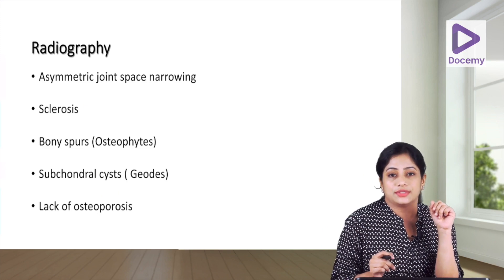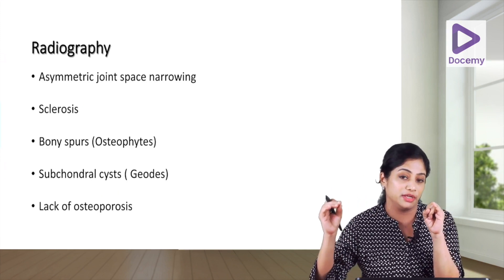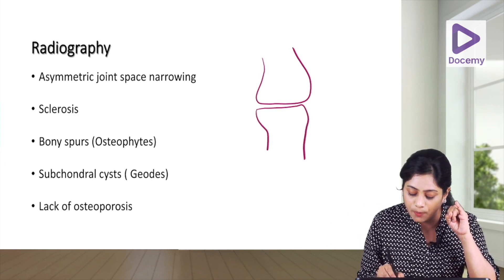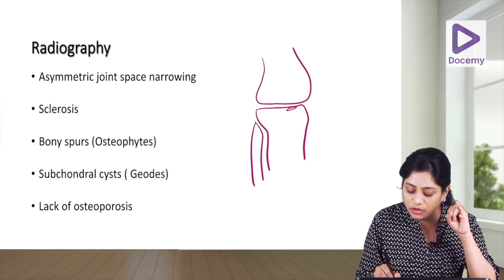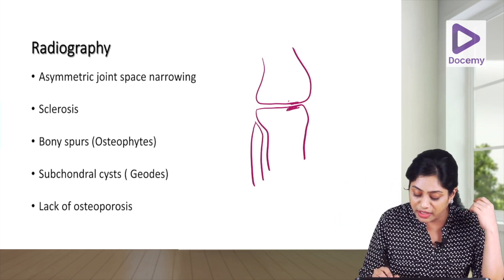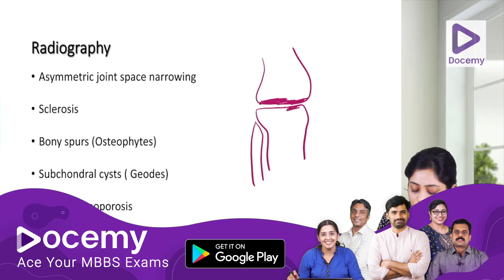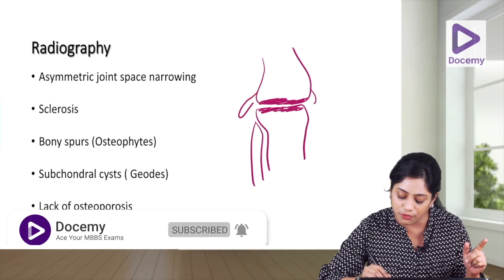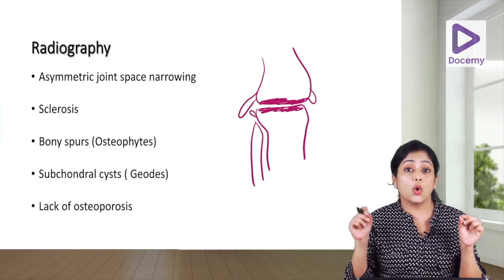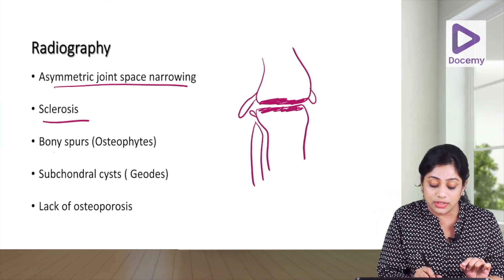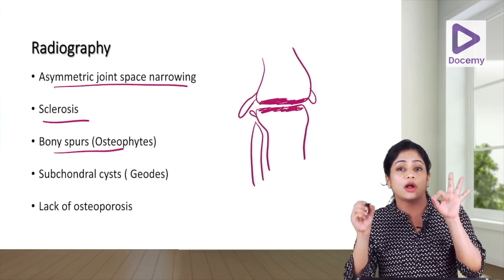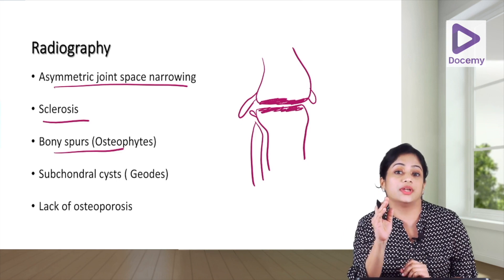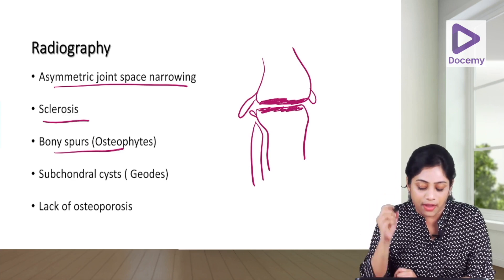Coming to radiography, there are five characteristic features. First is asymmetric joint space narrowing, more pronounced at the side with more weight bearing. Adjacent to the joint space narrowing, bone microfractures lead to juxtaarticular sclerosis. At the margins, bony spurs known as osteophytes form. These three — asymmetric joint space narrowing, juxtaarticular sclerosis, and osteophytes — are the hallmarks of osteoarthritis. If all three are not found on an X-ray, consider an alternative diagnosis.